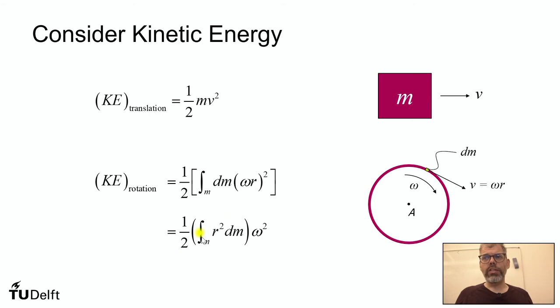And if you look at this, the integral of r squared dm, that's actually similar to the integral of y squared dA, right? It's looking at the distribution of area, well in this case mass, which would be area times density, or volume times density. So they're kind of similar, and in fact we give them a similar name. We call it the mass moment of inertia rather than the area moment of inertia. And this is the mass moment of inertia about the axis A coming in and out of the page.